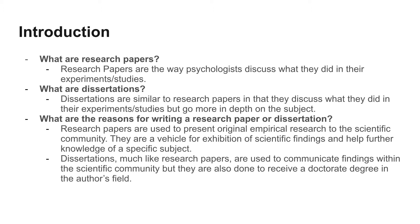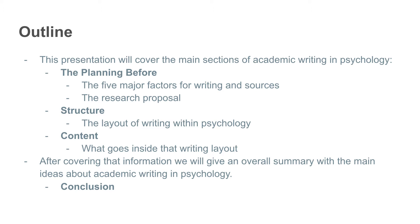Now that you have a clearer idea of what research papers and dissertations are, we will be going over what this presentation seeks to cover in terms of academic writing in psychology. This presentation will cover three main sections: planning the paper, the structure of the papers, and the content of each individual section. In planning, we will look at research proposals as well as key factors of writing the paper and using external sources. In structure, we will go over what sections are present in research papers and dissertations. Lastly, we will examine the essential writing components of each section. After going over these topics, we will summarize the main ideas within the conclusion.